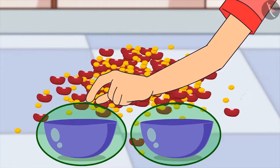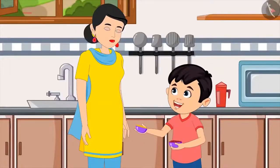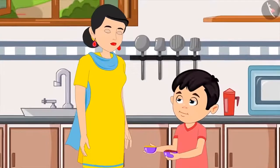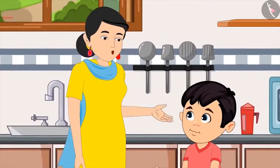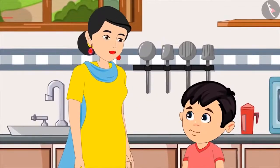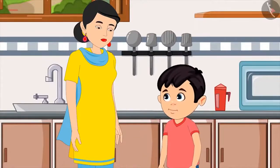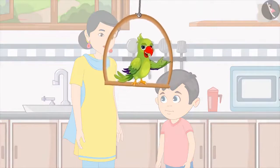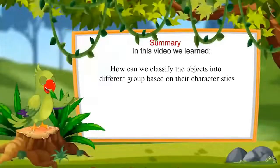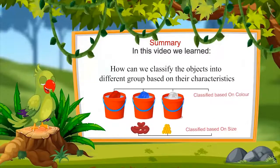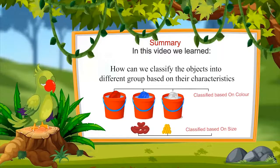Chotu separated the dal and rajma and said, 'Here you go, mom — dal and rajma are separated.' His mother thanked him. So children, did you enjoy seeing the examples of classification? That's all for today. In this video, we learned how we can classify objects based on their characteristics like color and shape, and how to create different groups of them. I hope you have enjoyed and understood this topic properly. Bye friends.